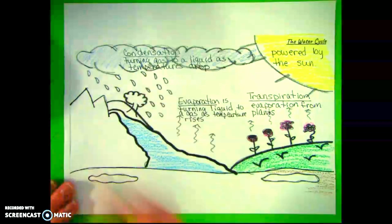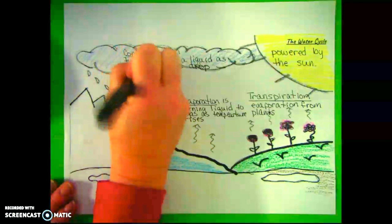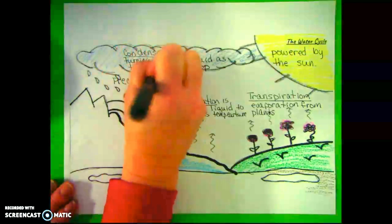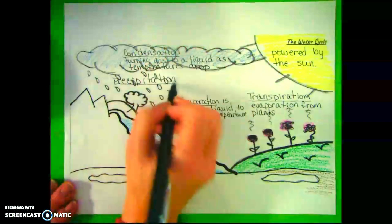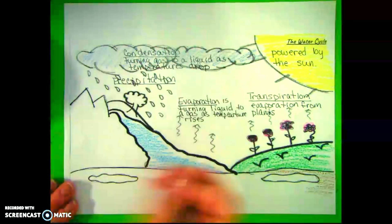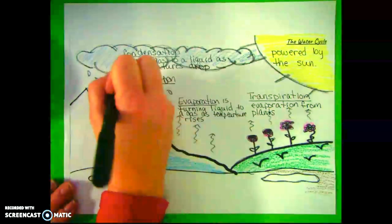Once enough condensation has gathered, it starts making precipitation. Precipitation is water that drops to the earth. Now, there are several forms of precipitation that we will talk about.